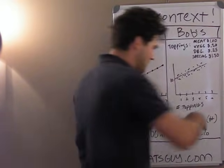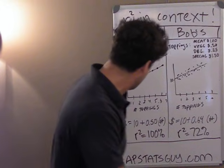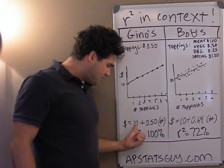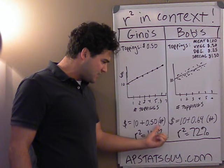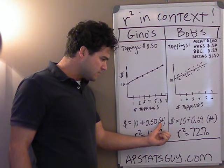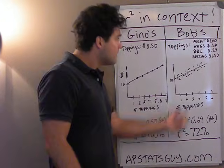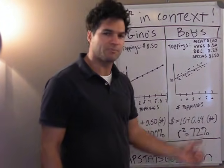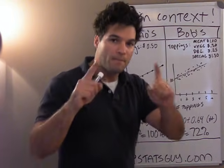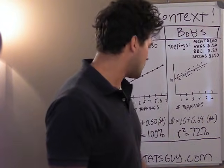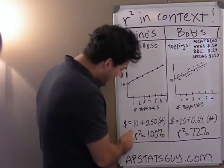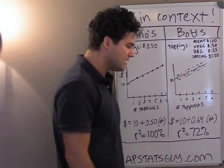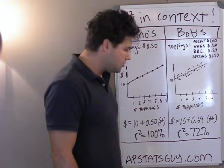The equations were similar but a little bit different. For Gino's it was $10 for a cheese pizza plus about $0.50 per topping. At Bob's it was $10 for a cheese pizza and about $0.64 per topping. But the big difference wasn't just their equations — the R-squared at Gino's was 100%, and the R-squared at Bob's was only 72%.